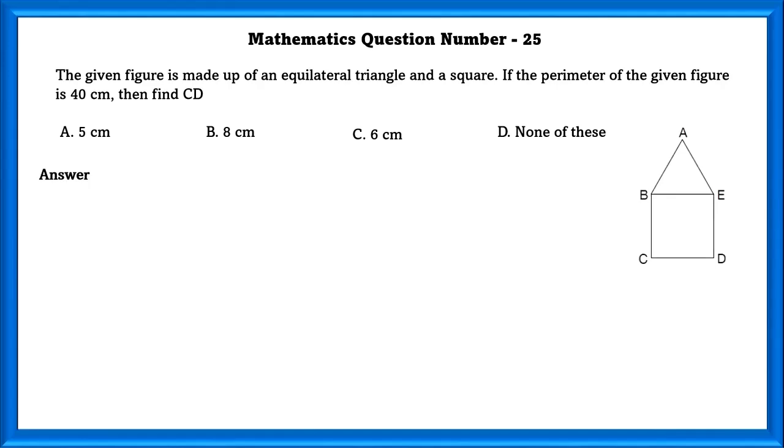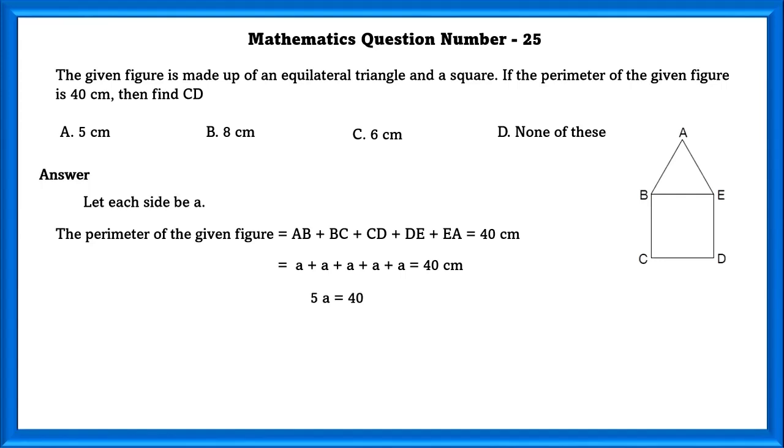Mathematics question number 25. The given figure is made up of an equilateral triangle and a square. If the perimeter of the given figure is 40 cm, then find CD. Let each side be A. The given perimeter of the figure, which is equal to the sides AB plus BC plus CD plus DE plus EA is equal to 40 cm. That can shortly be written as 5A which is equal to 40. Using this, we can find the value of A which is equal to 8 cm. So then the value of CD, that is A aside, is equal to 8 cm.